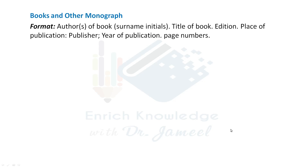Suppose you have derived some text or reference from a book or monograph. The standard format is: Author(s) surname, initial, full stop. Title of the book, full stop. Edition, full stop. Place of publication: Publisher; year of publication. Page number, full stop.